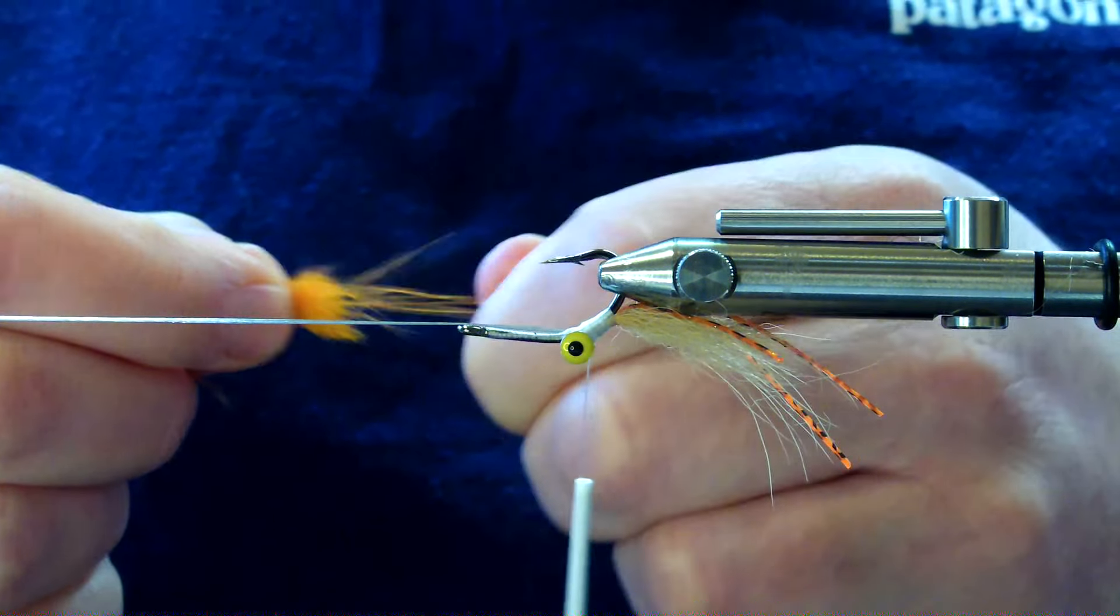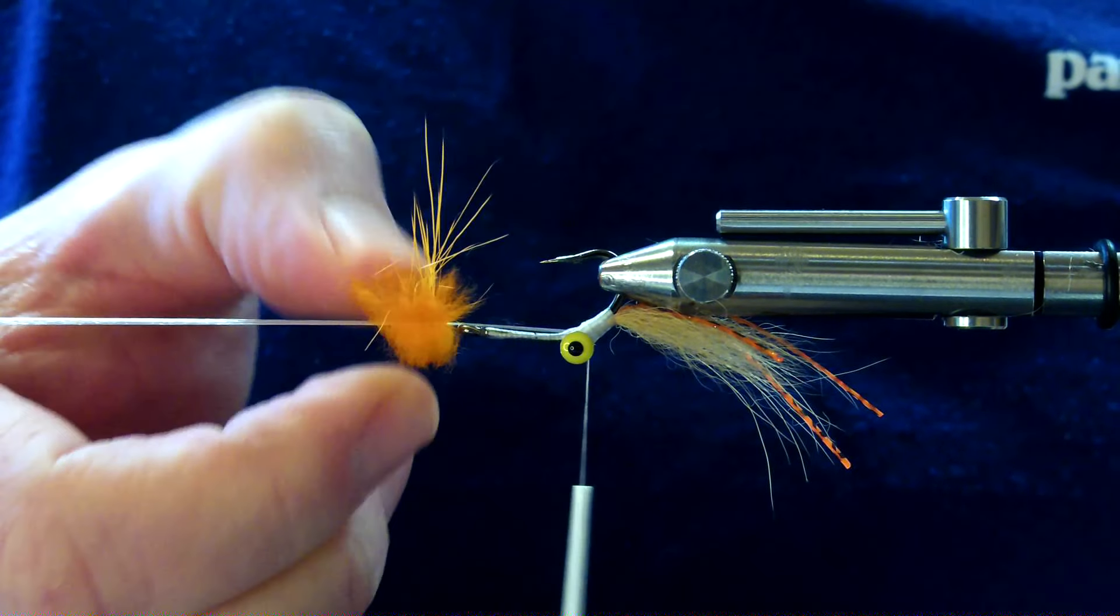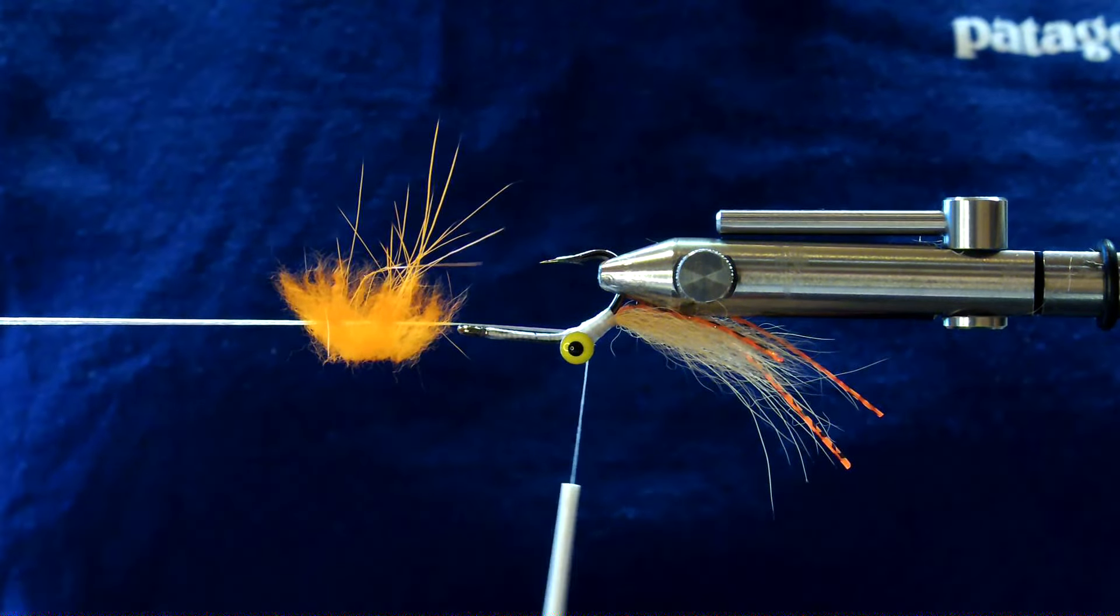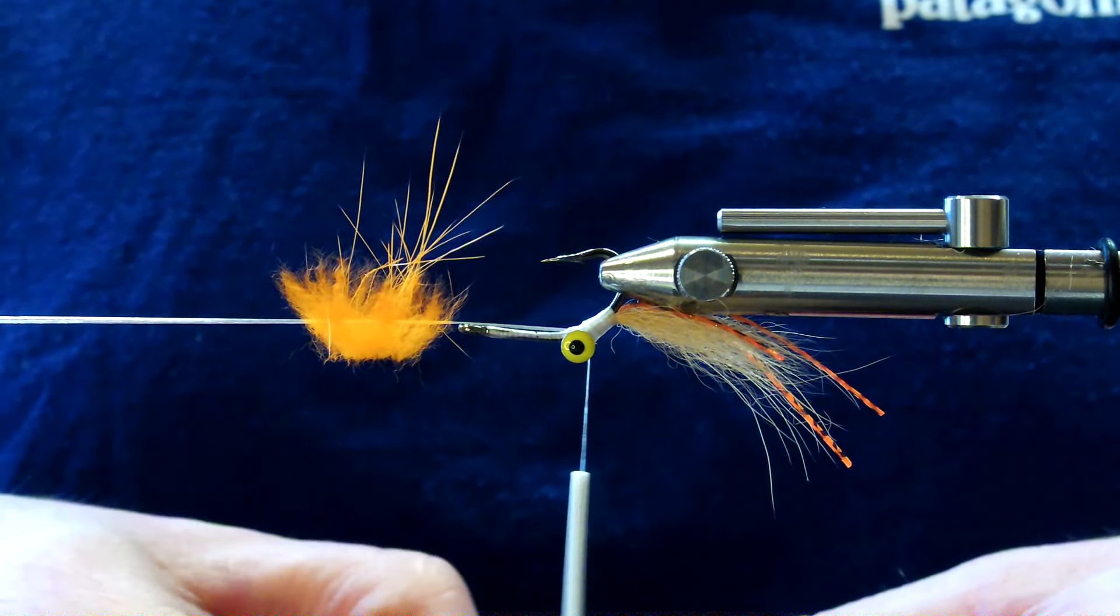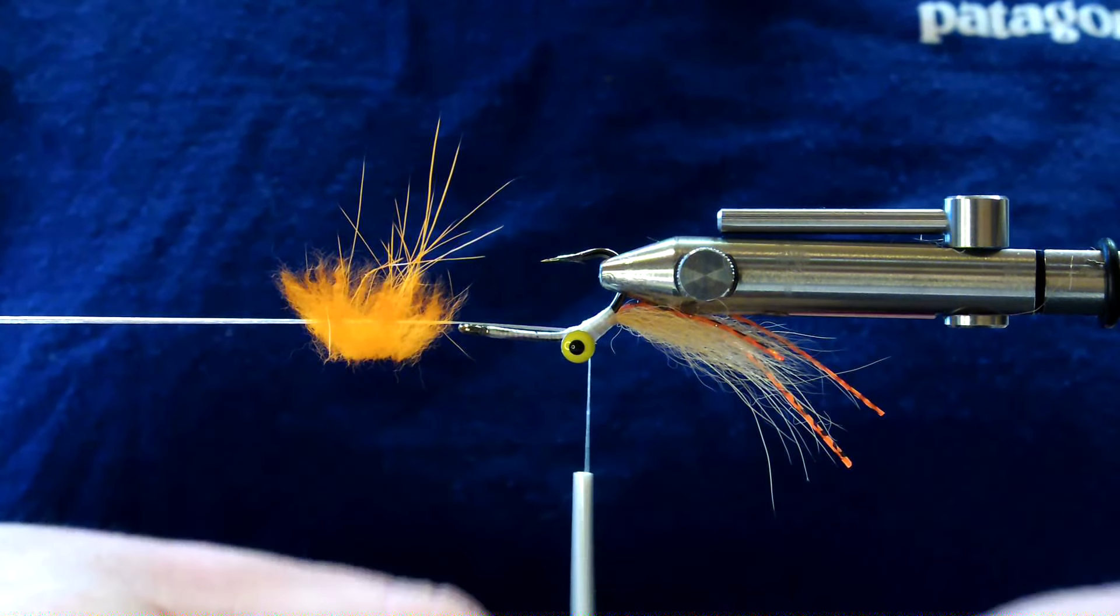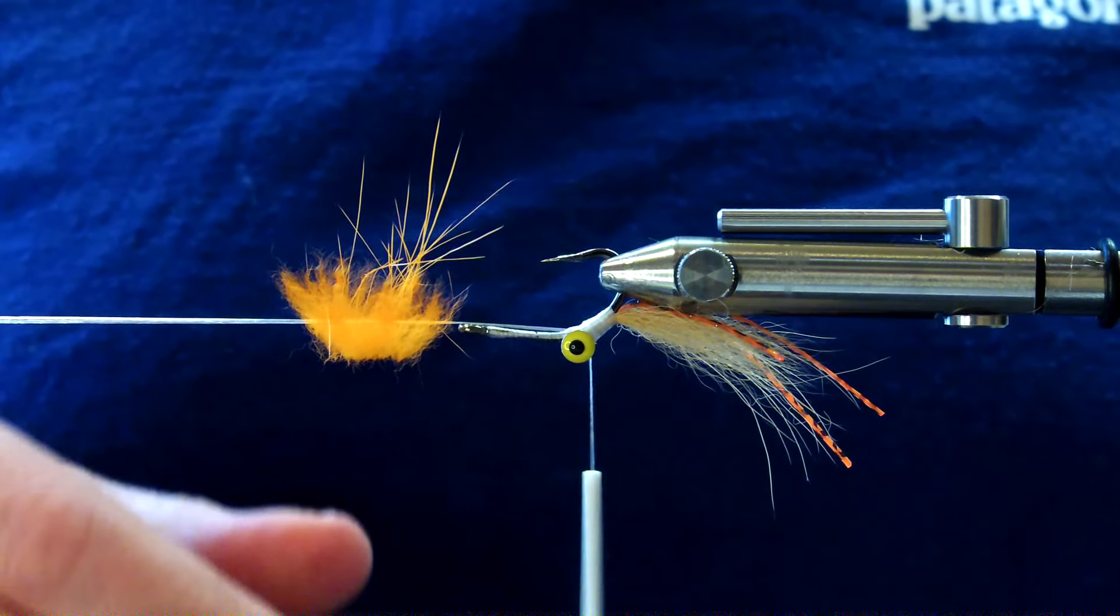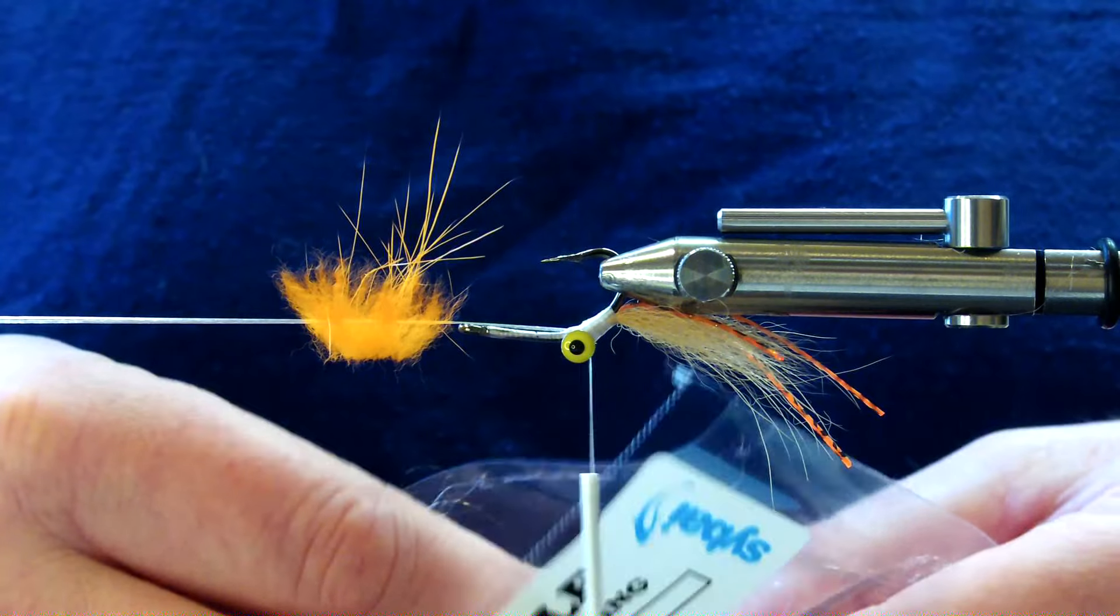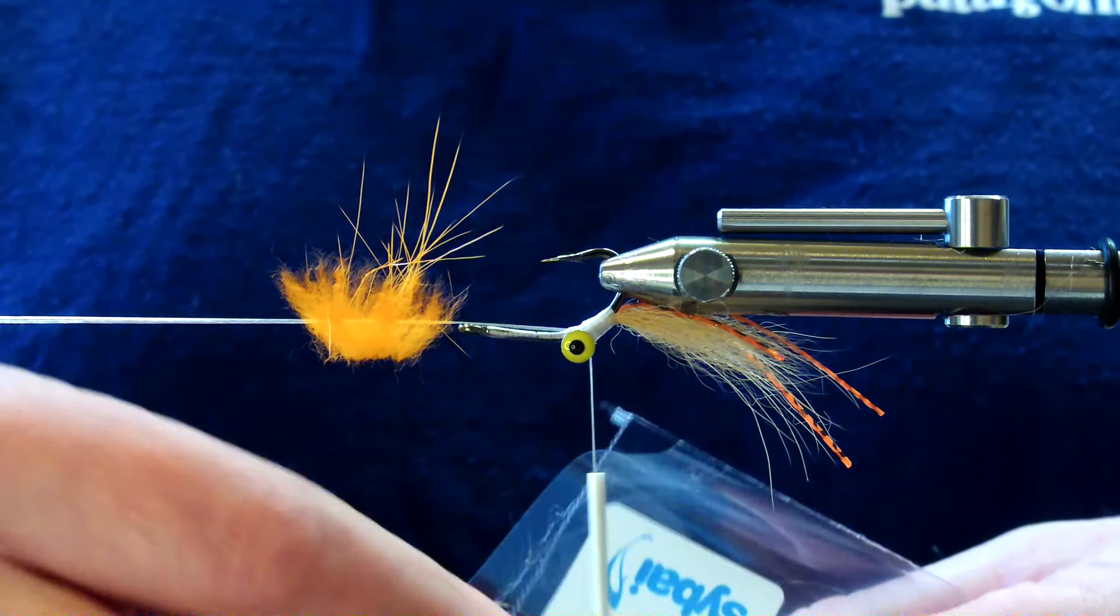So this is a small pinch of nutria. I used to use rabbit for this part but I actually prefer nutria just because it's got those nice long guard hairs and really dense underfur. And the rest of the loop is going to be made up of this flat stub, this is the Flats Crab Tan I think from Fly Tyer's Dungeon.